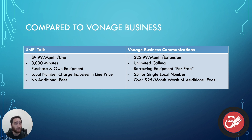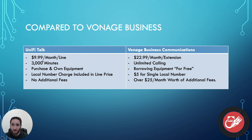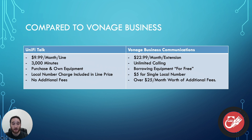Unify Talk, on the other hand, is $9.99 per month per line. That $9.99 is essentially equivalent to the $5 local number charge, so you're really paying $10 per local number, which includes 3,000 minutes of calling — again, for smaller companies. You do have to purchase and own the equipment yourself, which is different from borrowing it from Vonage. However, the local number charge is already included in that $10 a month, and there are no additional fees. It is $10 a month per line, flat.